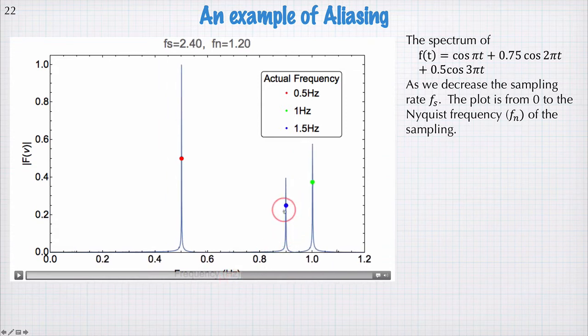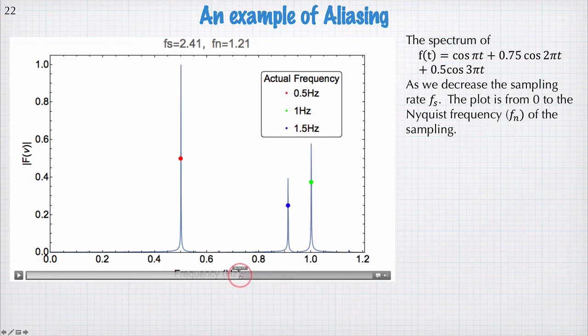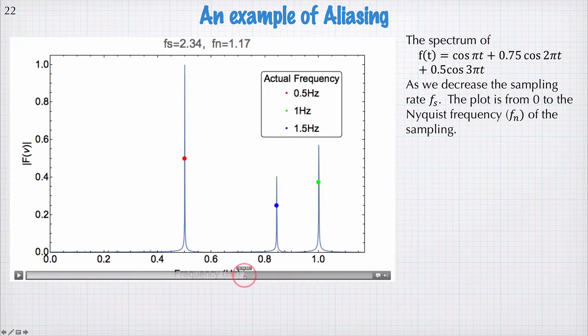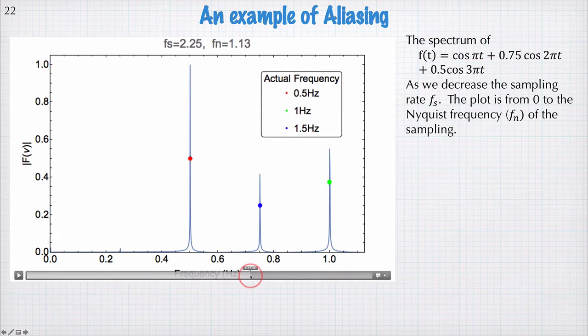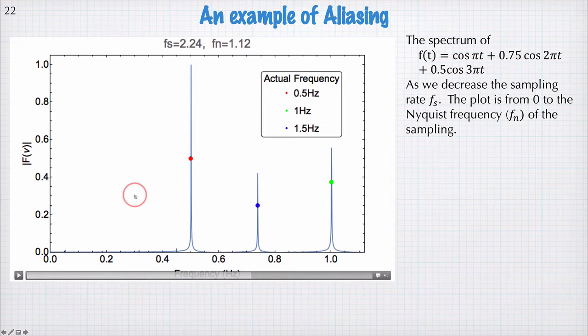Now we know that this frequency here is one and a half hertz. But as we decrease the sampling frequency, decrease the Nyquist frequency, it's being interpreted as all kinds of frequencies between zero and the Nyquist frequency. So it gets wrapped back in to the domain between zero and the Nyquist frequency.